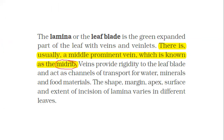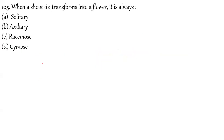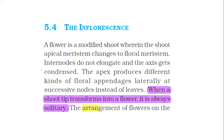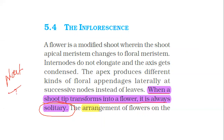Question 105: When a shoot tip transforms into a flower, it is always solitary — a single flower will be formed. This is a direct NCERT line: when a shoot tip transforms into a flower it is always solitary. The correct answer is option A — solitary.